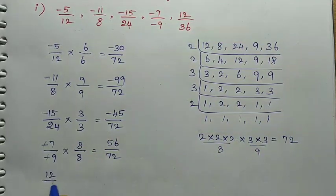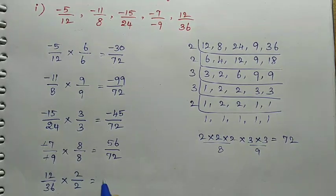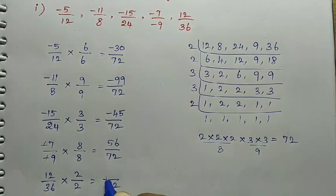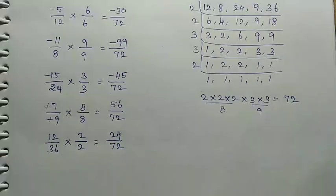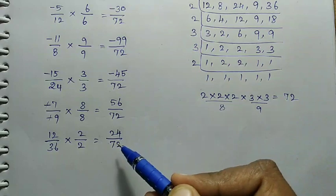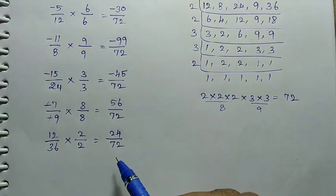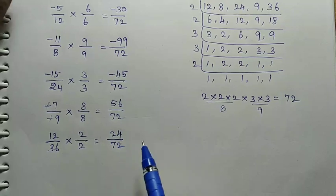Next value: 12 divided by 36. Since 36 is the denominator, to get 72 we multiply by 2. So denominator becomes 72. Numerator: 12 multiplied by 2 = twenty-four. So 12/36 becomes 24/72. So now we have all values with denominator 72 and we can arrange them.